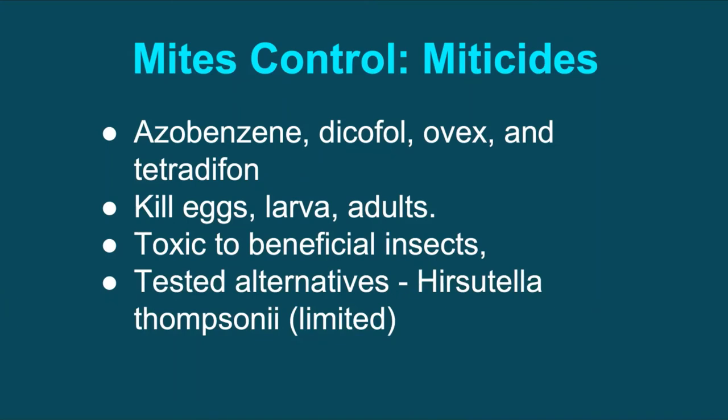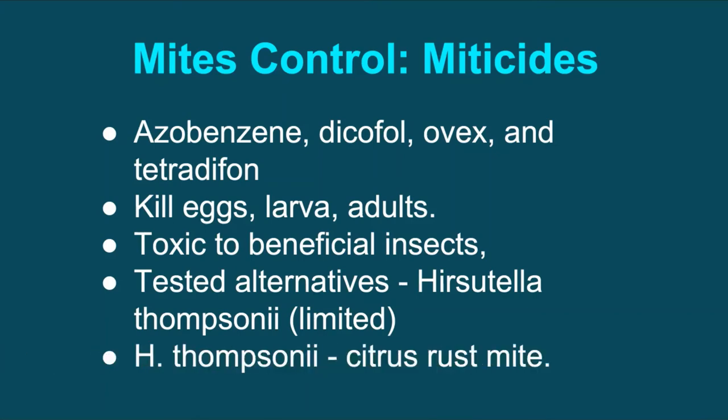Tested biological alternatives are limited. However, the fungal pathogen Hirsutella thomsoni offers promise to control coconut mites in the USA, Suriname, Israel, and China. Hirsutella thomsoni has also been recorded to be useful to control citrus rust mites. Interestingly, Hirsutella is suited only to Eriophytid mites and not against the Tetranychidae group of mites.